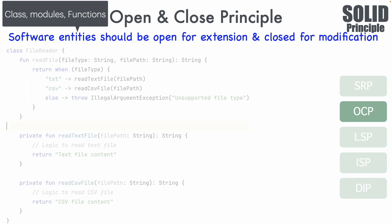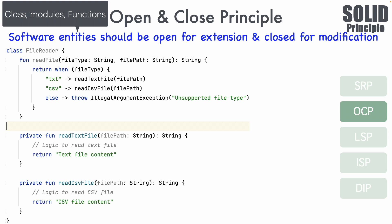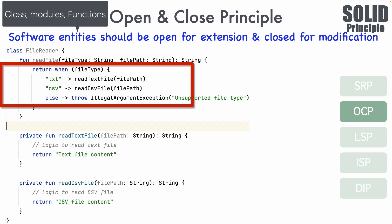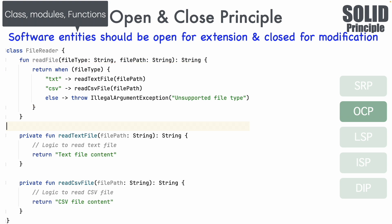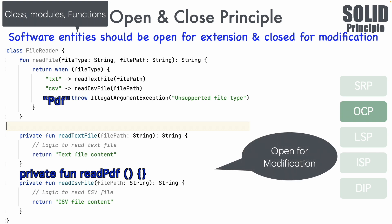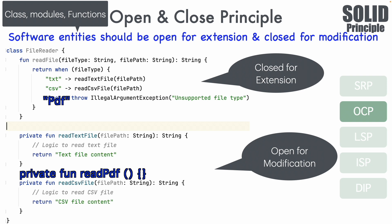Let's take another example. We have a class called FileReader capable of handling two types of files: text files and CSV files. If we now want to introduce a new format — say, reading PDF files — we will have to add more complicated code into the same single class and function. Once again, this is open for modification instead of extension, which is exactly what OCP doesn't recommend.